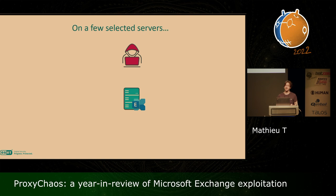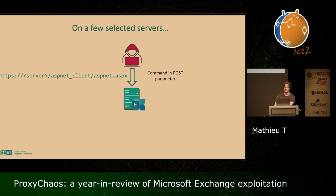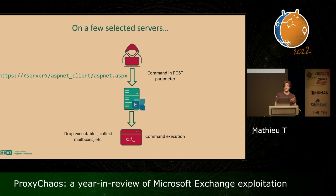Dropping that web shell is just the first step for the attackers. The attackers can then come back a few minutes or sometimes even a few days after the exploitation in order to execute commands on the server. The attacker browses to the URL where the web shell is located and sends their command embedded into a POST parameter to that URL. This command is then interpreted by the web server running on the Exchange server. These commands can be used by the attacker to drop additional executables — for example, to install a complex backdoor on the server. But the attacker can also choose not to deploy any malware and just directly dump full mailboxes from the server.